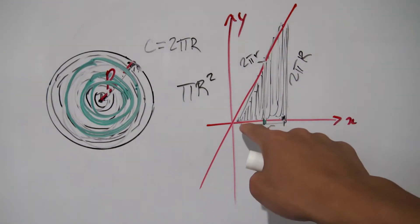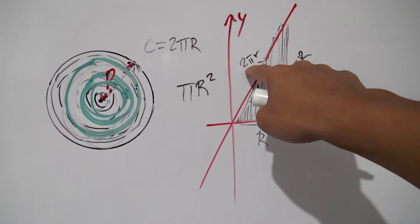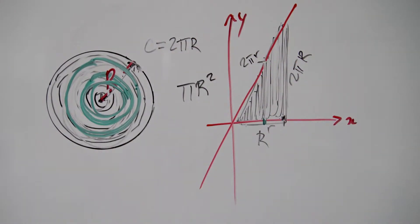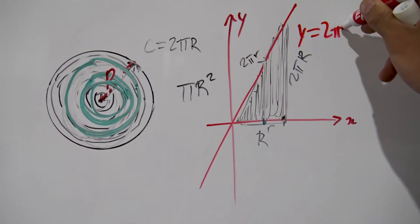And notice that whatever radius we pick in this range here to get to our circumference here, all we're doing is multiplying it by 2 pi. So we can come up with an equation for this line here which kind of represents the circumference of each radius to be y equals 2 pi x.